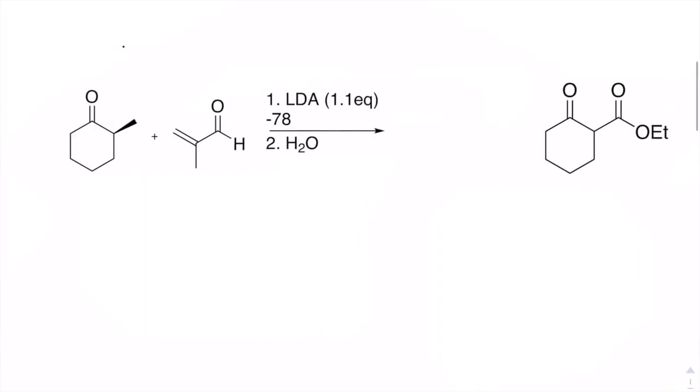So in this molecule, we see that we have LDA greater than 1 equivalent. So that's going to tell me that I'm under kinetic control. Basically, I know that I'm going to have my enolate on the less-substituted position. I know that that enolate is going to add at the beta position, push those electrons over, and then push that up.